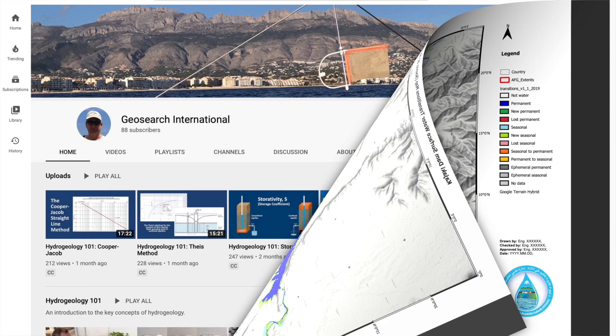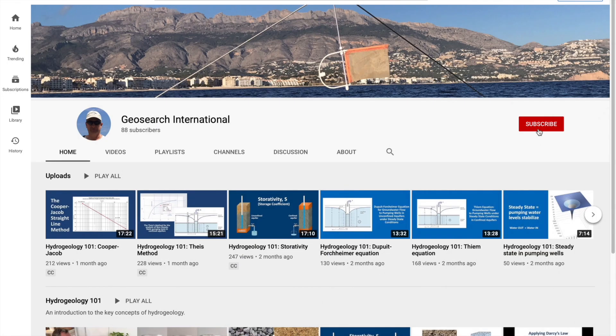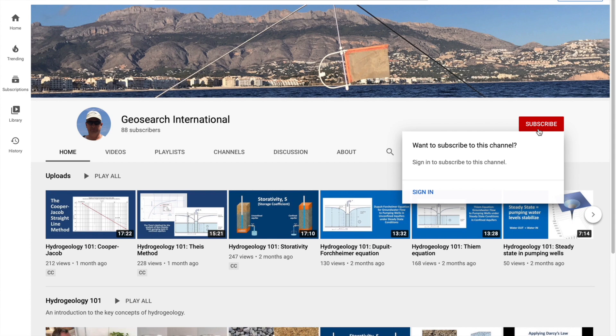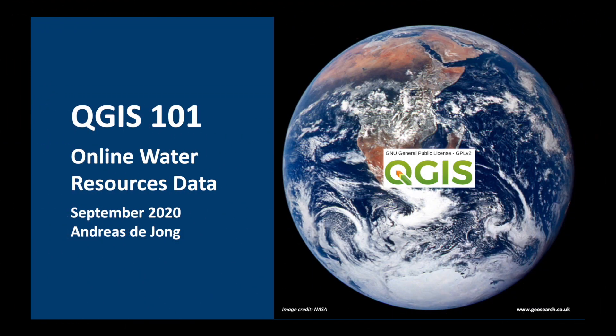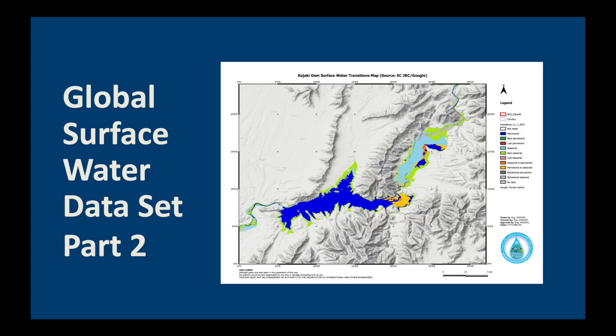I hope that you will enjoy it and don't forget to subscribe to my channel for more exciting videos. Welcome to QGIS 101 online water resources data. Today we're going to continue looking at the global surface water dataset and we're going to download some of the data and process it in QGIS to make a map like the one you can see here on the right.